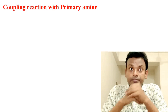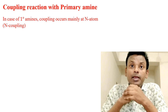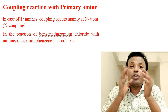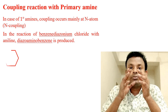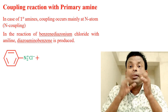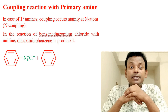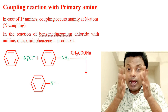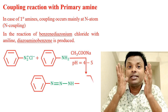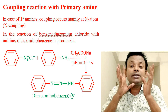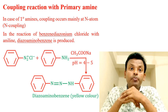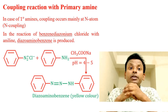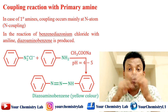Coupling reaction with primary amine: in the case of a primary amine, coupling occurs mainly at the nitrogen atom — that is nitrogen coupling. In the reaction of benzene diazonium chloride with aniline, diazoamino benzene is produced. The reaction uses sodium acetate (CH3COONa) at pH 4 to 5, giving diazoamino benzene — a nitrogen coupling product that is yellow in color. When diazoamino benzene is heated with aniline hydrochloride or HCl, it undergoes rearrangement producing para-amino azo benzene — a carbon coupling product.